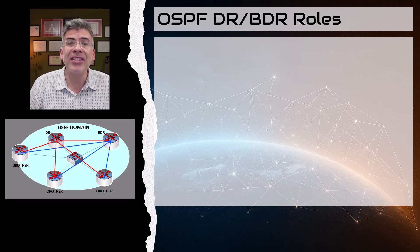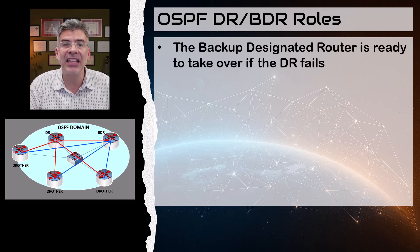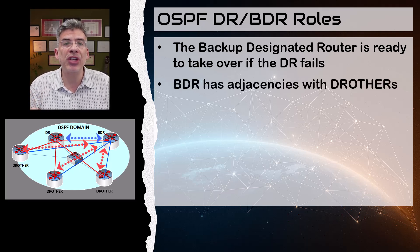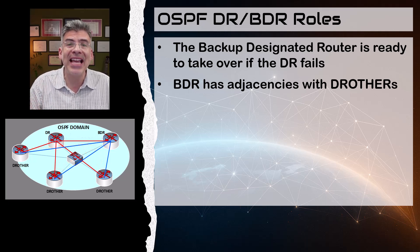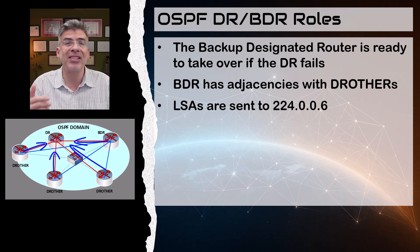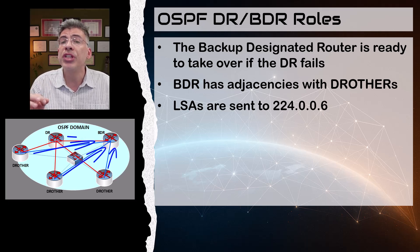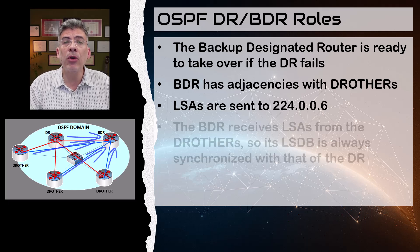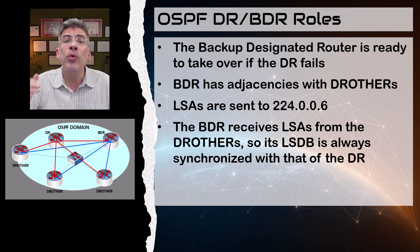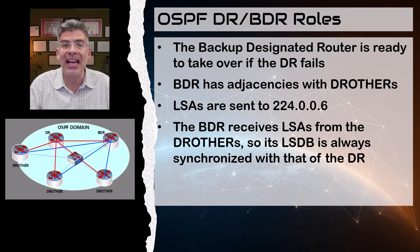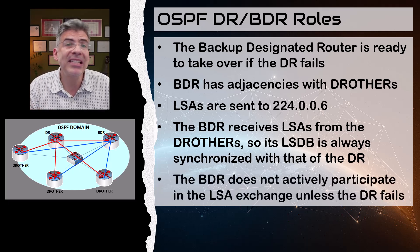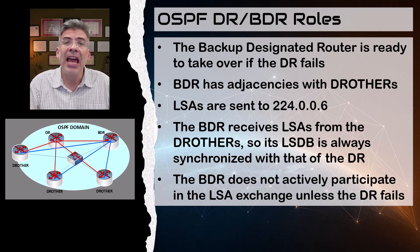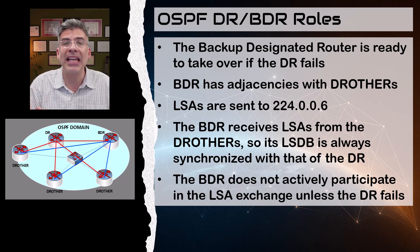The backup designated router, or BDR, is always ready to take over immediately in the event that the DR fails. The BDR also has OSPF adjacencies with all DR others, and the DR others actually send their LSAs to the 224.0.0.6 multicast address, which is the all-DR-routers address, which includes both the DR and the BDR. So the BDR receives the same LSAs that the DR receives from the DR others, and its link state database is synchronized with that of the DR. However, the BDR does not actively participate in the LSA exchange — it doesn't send any LSAs to DR other routers unless the DR itself fails. So it silently receives LSAs and maintains an updated LSDB.